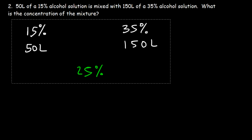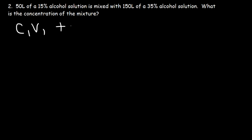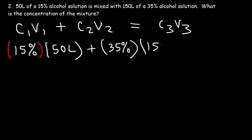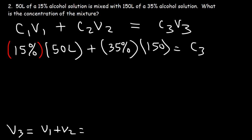So let's use the same formula: C1·V1 + C2·V2 = C3·V3. C1 is the concentration of the first solution, so that's 15%. V1, the volume of the first solution, is 50 liters. C2, the concentration of the second solution, is 35% — we'll just use 35 instead of 0.35. V2 is 150. C3 is what we're looking for — we want to find the concentration of the mixture. V3 is the sum of V1 plus V2: 50 plus 150 is 200 liters.